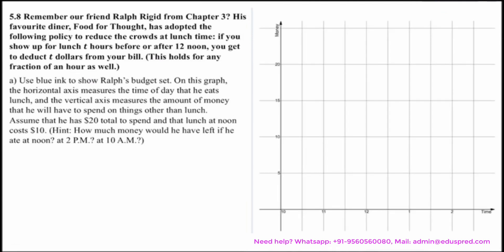This is the graph where on the x-axis we have time, what time of the day he eats his lunch, and on the y-axis we have money, the amount he has to spend on other things than lunch. He has an income of, let M represent the income of $20, and lunch costs him $10 if he is having it at noon. So we have two options: he eats before noon, that means t hours before noon, or if he eats at noon, or if he eats t hours after noon.